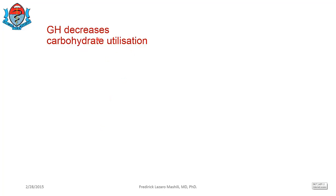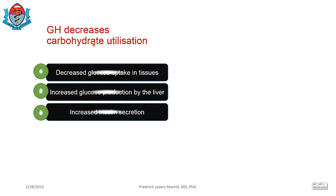Another effect of growth hormone is to decrease carbohydrate utilization. First, it causes decreased glucose uptake in tissues — glucose is not getting into the cells. Second, it causes increased glucose production by the liver. So you are restricting glucose from entering tissues while simultaneously producing more glucose from the liver. The net effect is increased blood glucose, which then stimulates the beta cells to produce more insulin — so growth hormone indirectly increases insulin secretion.